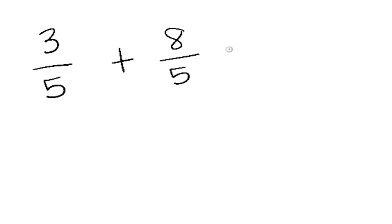So in this example, both denominators are already 5's, so you're good to go. So when you already have a common denominator, you keep the denominator the same in your answer. And then you simply just add the numbers on the top. 3 plus 8 is 11. So your answer is 11 fifths.